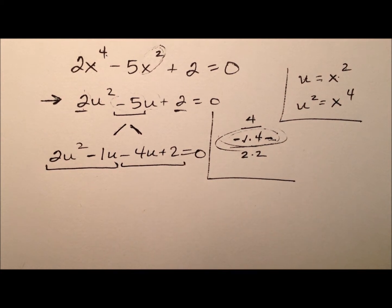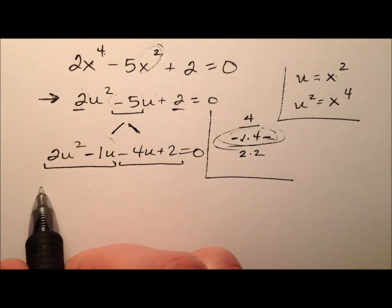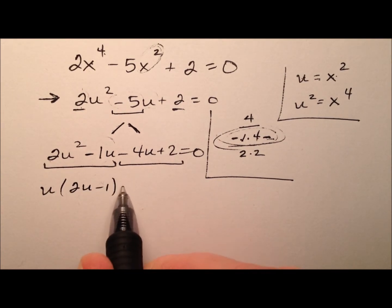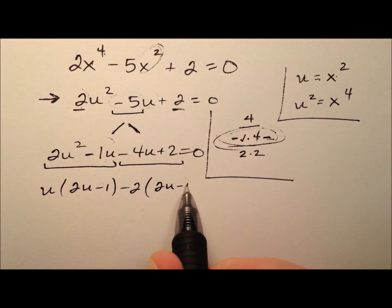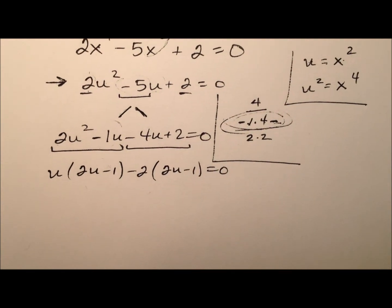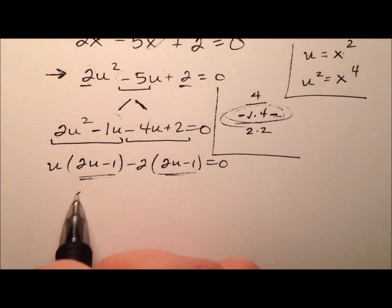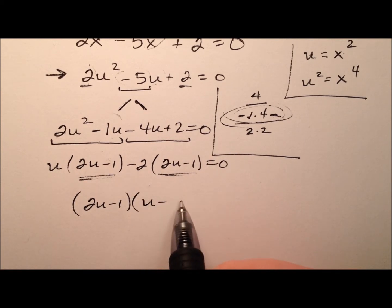The greatest common factor of this first pair is u. So I'll have 2u minus 1. Then we'll have negative 2 here and 2u minus 1. Our leftovers here are the same, which is very nice. Let's factor those out. So I have 2u minus 1 and then u minus 2 equals 0.